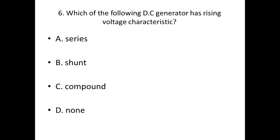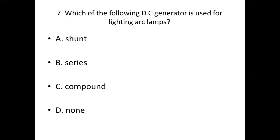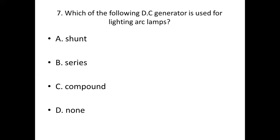Seventh bit: Which of the following DC generators is used for lighting or clamps? Option A: Shunt. Option B: Series. Option C: Compound. Option D: None. Answer — Option B: Series.